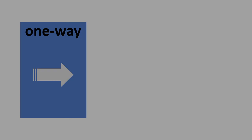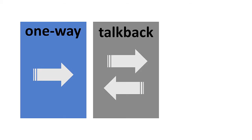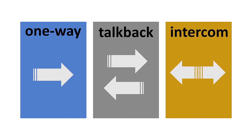So to review: one-way paging is where a voice page or announcement is sent out over the paging system and the people hearing it have no means to respond through the paging system. Talkback mode allows someone to respond to a page through the paging system. Intercom mode allows someone at either end to originate a conversation.